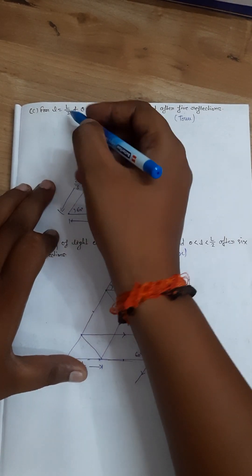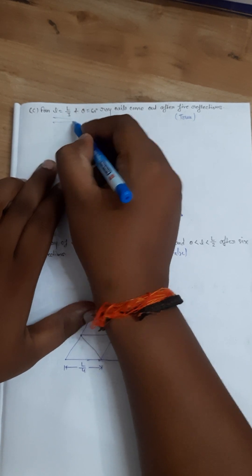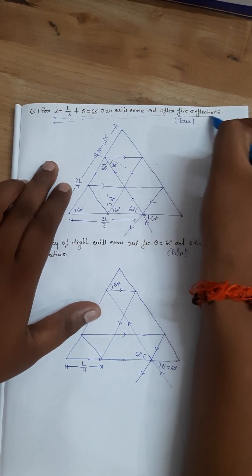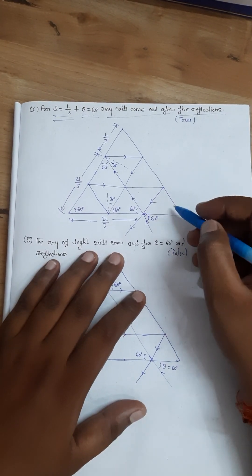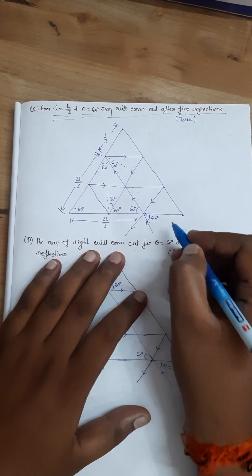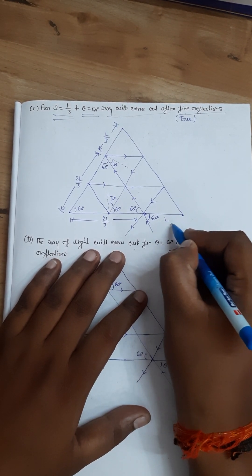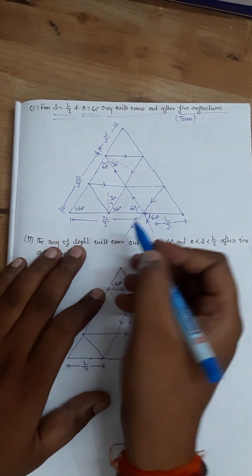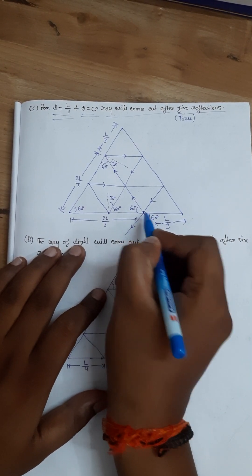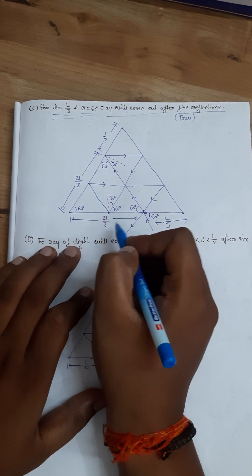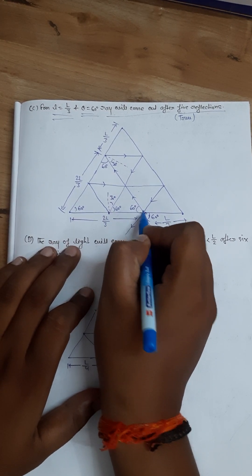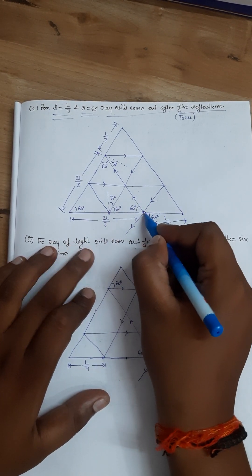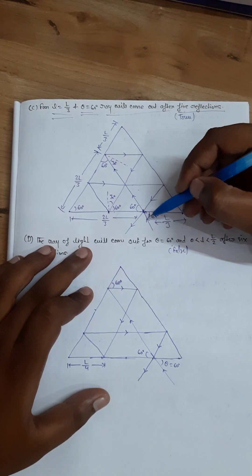This statement will be true. Moving to the third case: for small l equal to L/3 and theta equal to 60 degrees, the light will come out after five reflections. Let's see — if the value is l/3, we divide the side because we don't have scale: divide it 1, 2, 3. So if we enter this scale and a 60-degree angle enters the ray...